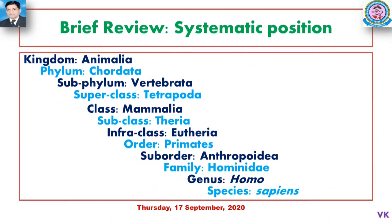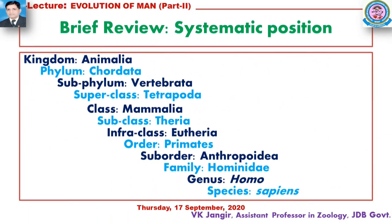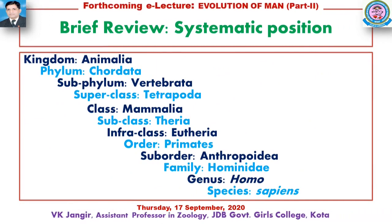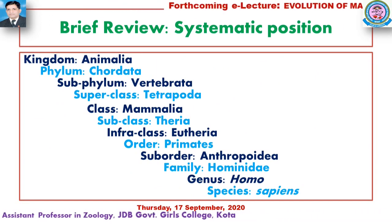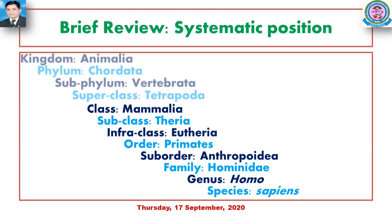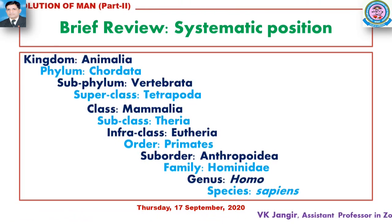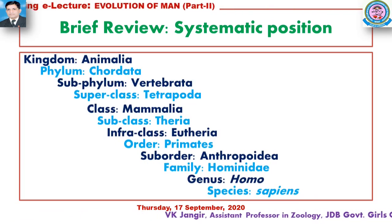This is the systematic position of Homo sapiens, or the classification of human beings: Kingdom Animalia, Phylum Chordata, Subphylum Vertebrata, Superclass.